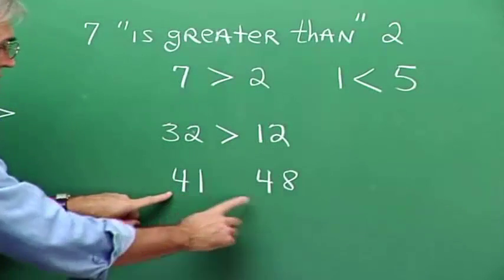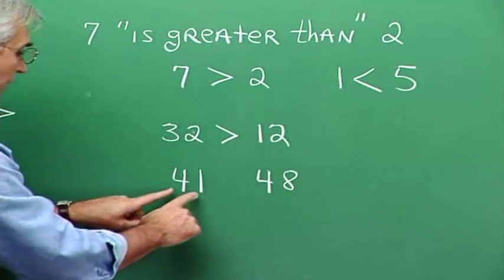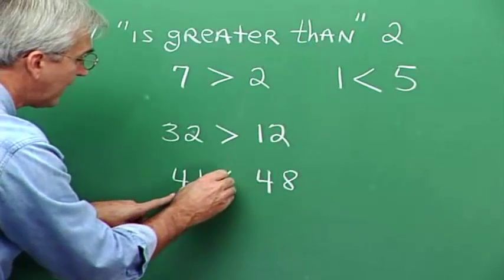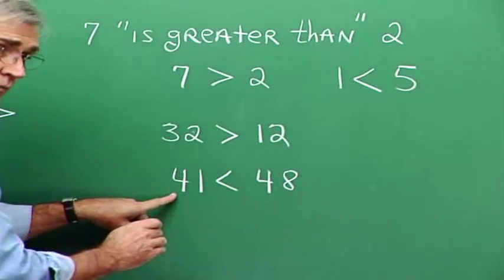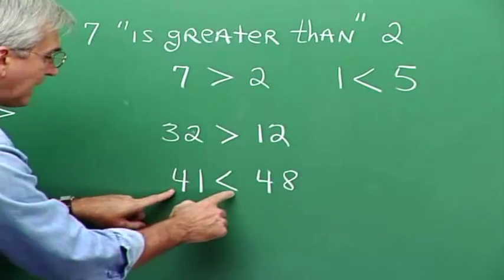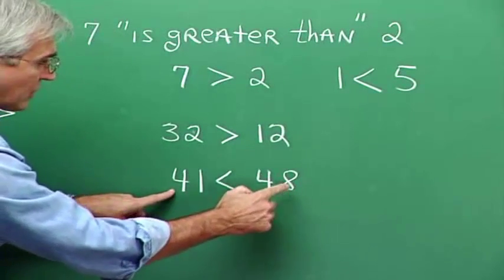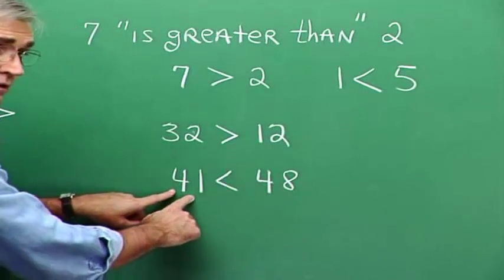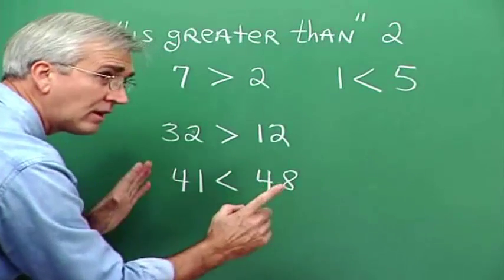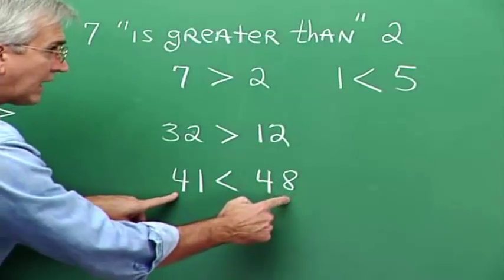Now compare 41 and 48. Again, we could say which one is smaller. Well, 41 is smaller than 48, so make the little arrowhead point toward the 41. We're writing the correct relationship: 41 is less than 48. And once again, 48 lies to the right of 41, and 41 lies to the left of 48 on the number line, so 41 is less than 48.